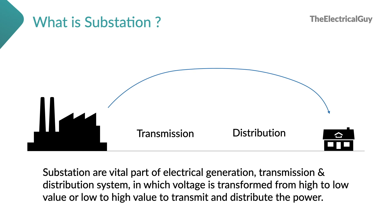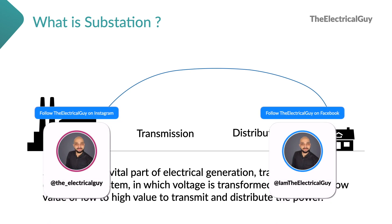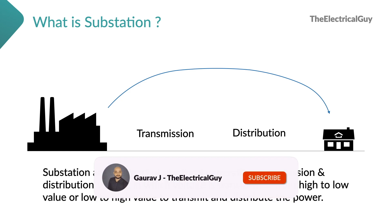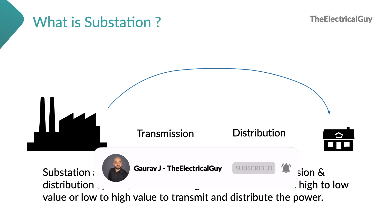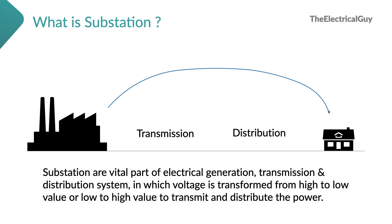This is not the only function — there are multiple functions for a substation. When substations were first installed, they were considered to be associated with a single generating station, and hence the name 'substation' was first used — 'sub' referring to a single station. But now the system has evolved; a substation is not only handling power from a single station but from multiple stations. In a power network, substations can be considered to be nodes, which enable the connection between transmission and distribution lines and the safe connection and disconnection of one line to another.